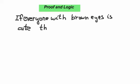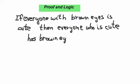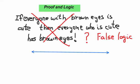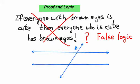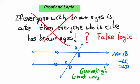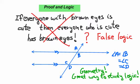There's another unit called proof and logic. If everyone with brown eyes is cute, does that mean everyone who's cute has brown eyes? No — that's false logic. People will try to convince you with false logic all the time. We're going to do a lot of geometry to study logic, because geometry is a very clear science — everybody knows what a line is, everybody knows what a circle is. It's a lot easier to think logically when you're working with well-defined shapes rather than contentious issues.